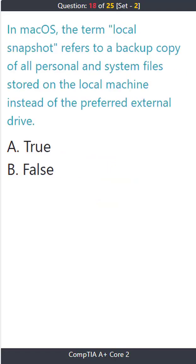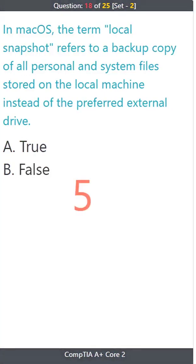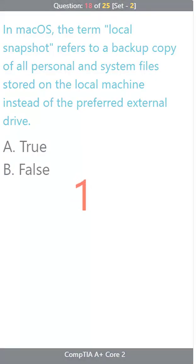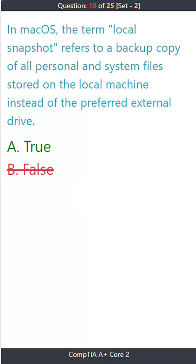Question 18. In Mac OS, the term 'local snapshot' refers to a backup copy of all personal and system files stored on the local machine instead of the preferred external drive. A) true, B) false. The correct answer is A) true.